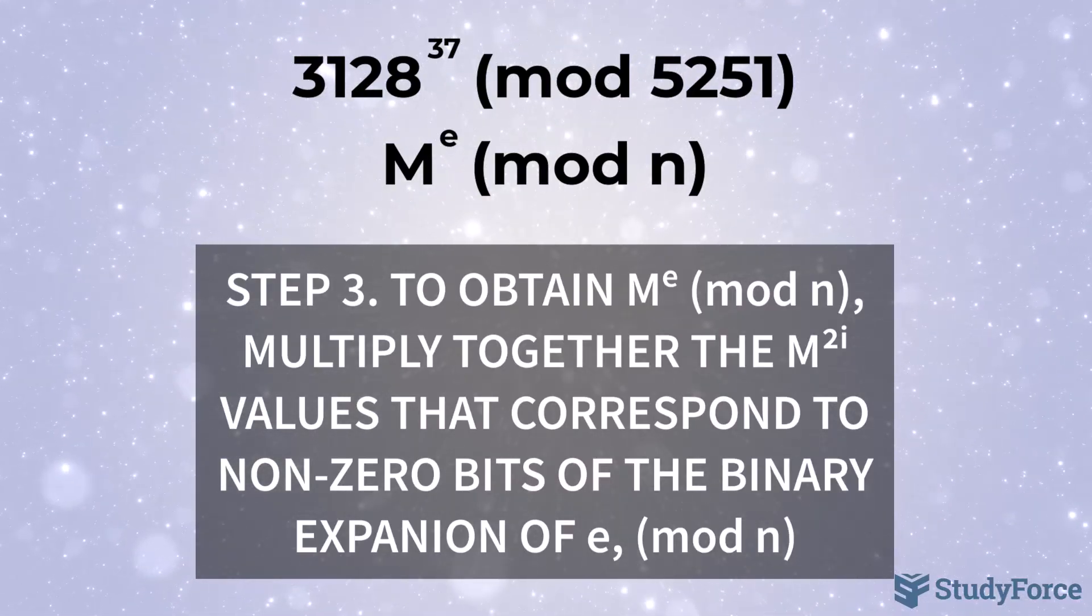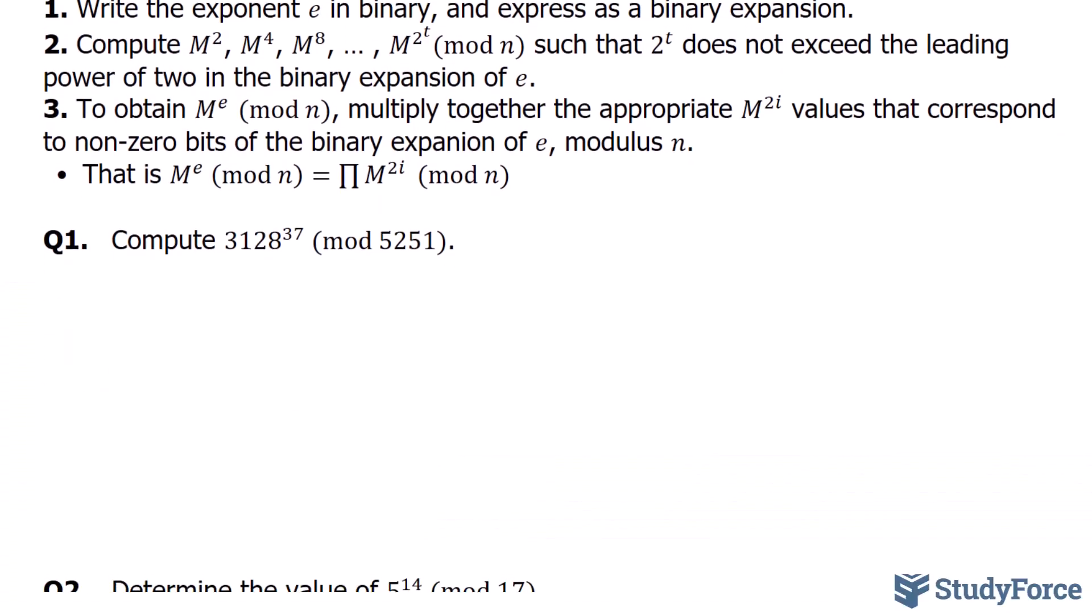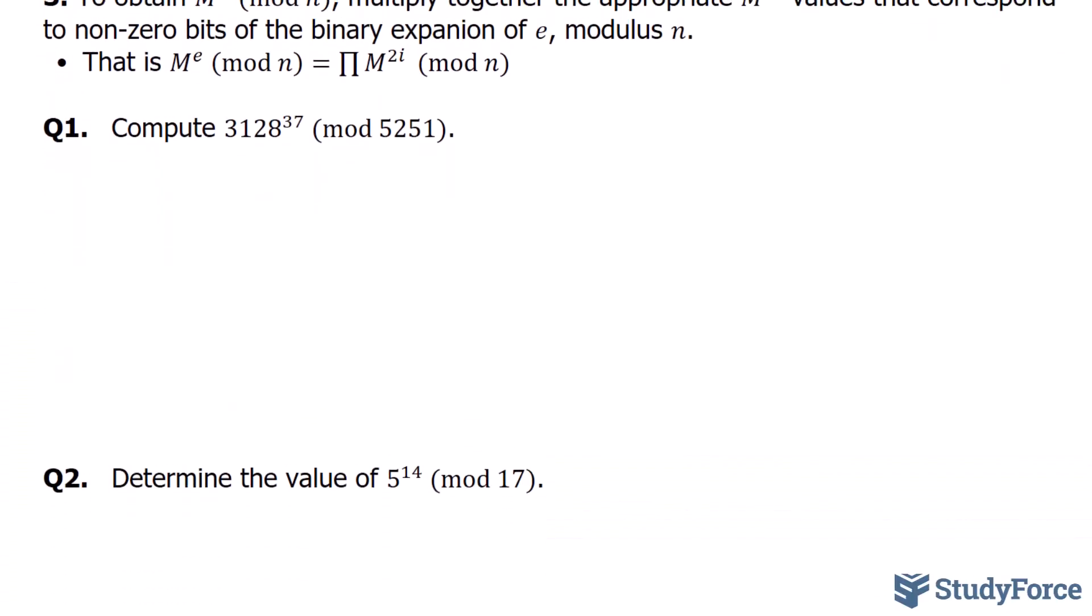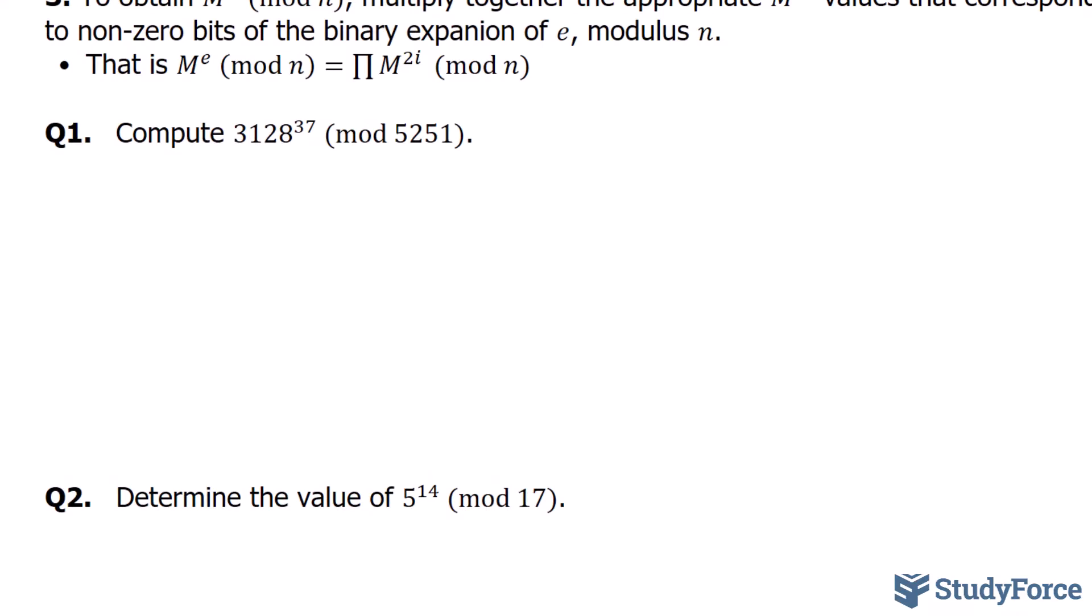Let's take a look at an example where we put this all together. In the first of two examples that I've prepared in this series, we have the example we started with: 3128 to the power of 37 mod 5251. According to step number 1, we have to write the exponent 37 as a binary expansion. But before we can do that, we have to write this as a number in binary. I'm assuming you know how to do this, so I'll just tell you that this is equal to 100101 in binary.